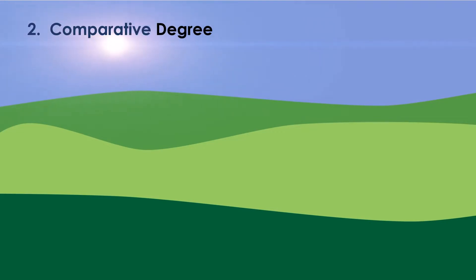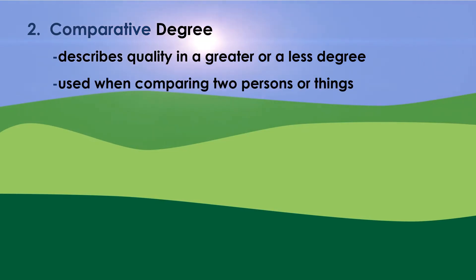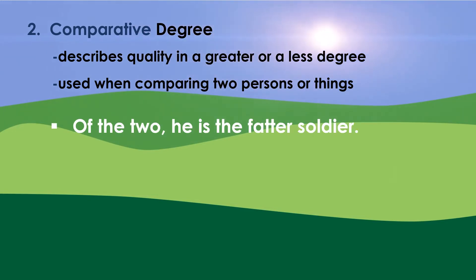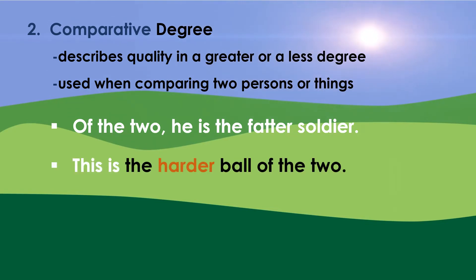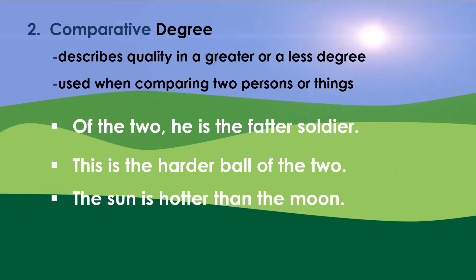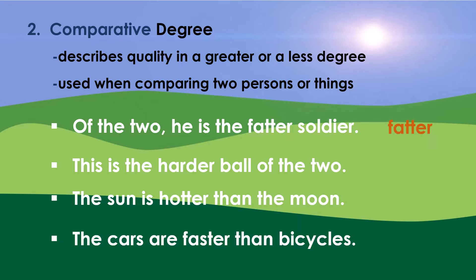Comparative degree describes quality in a greater or lesser degree. It is used when comparing two persons or things. For example: of the two, he is the fatter soldier; this is the harder ball of the two; the sun is hotter than the moon; the cars are faster than bicycles. Fatter, harder, hotter, and faster are adjectives in the comparative degree.